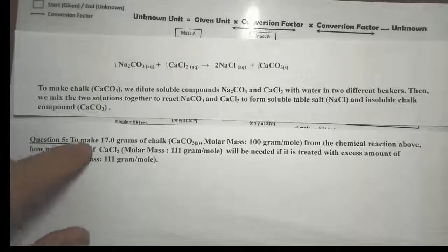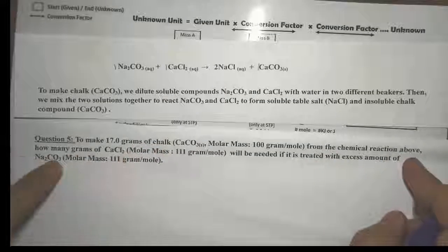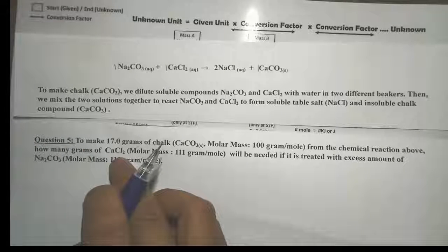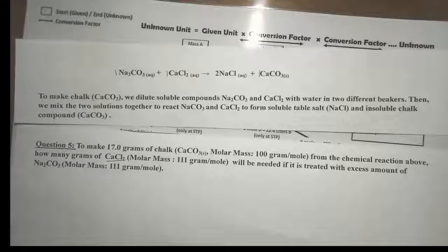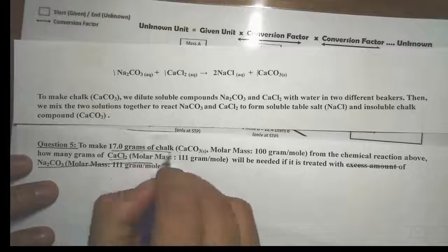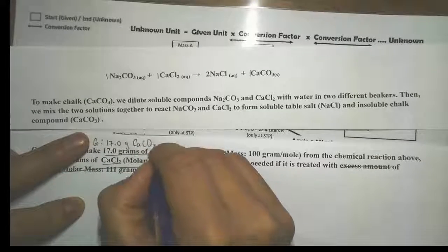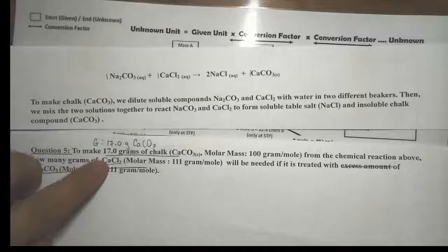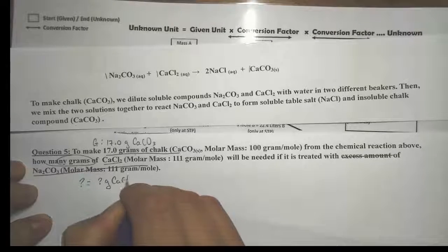Let's try another problem. To make 17.0 grams of chalk — no longer moles, but grams — from the chemical reaction above, how many grams of calcium chloride are needed? We're not looking for grams of sodium carbonate, Na₂CO₃, but for grams of CaCl₂, treated with excess sodium carbonate. Our given is 17.0 grams of CaCO₃, and we're solving for grams of CaCl₂.